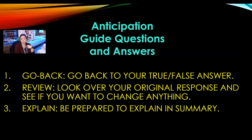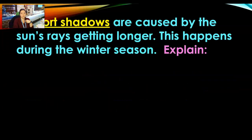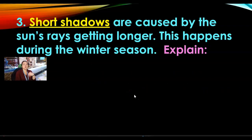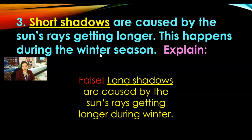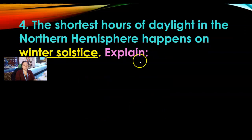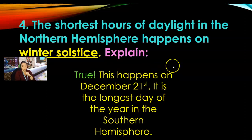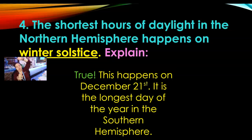Let's go back to the anticipation guide to answer these questions. Shortest shadows are caused by the sun's rays getting longer, and this happens during the winter — this is false. Longer shadows are caused by the sun's rays getting longer during the winter, so longer shadows and longer rays give you winter; shorter shadows and shorter rays give you summer. The shortest hours of daylight in the northern hemisphere happen on the winter solstice — this is absolutely true. It happens December 21st, and it's the longest day of the year for the southern hemisphere.